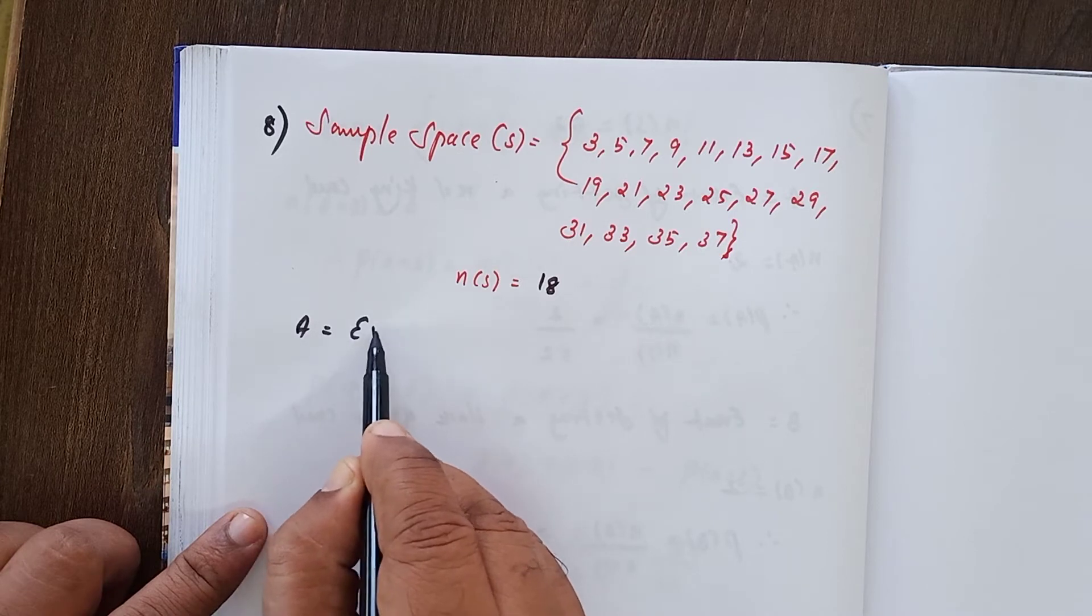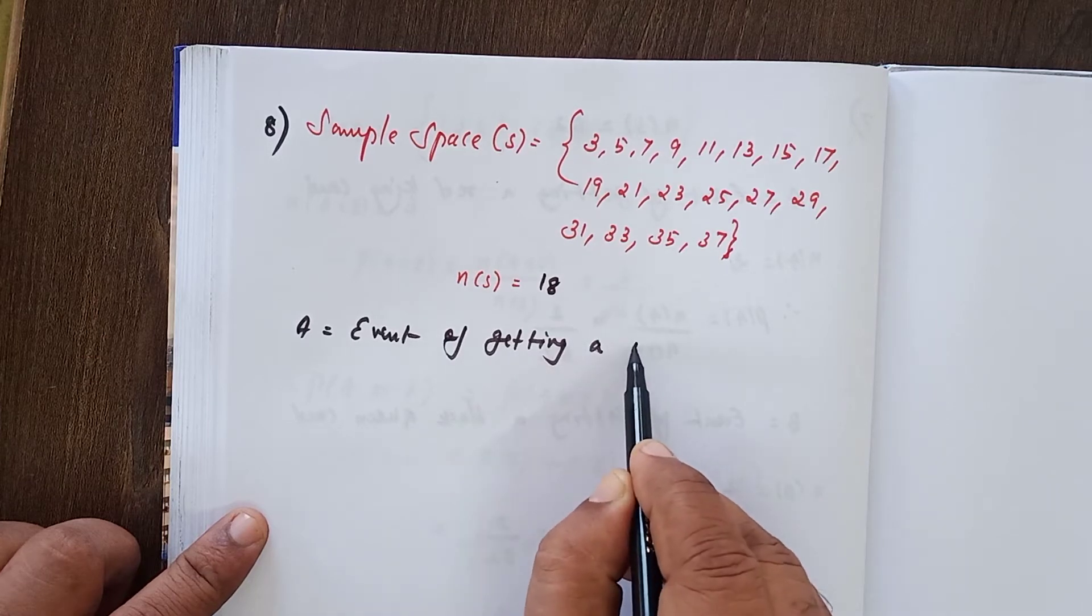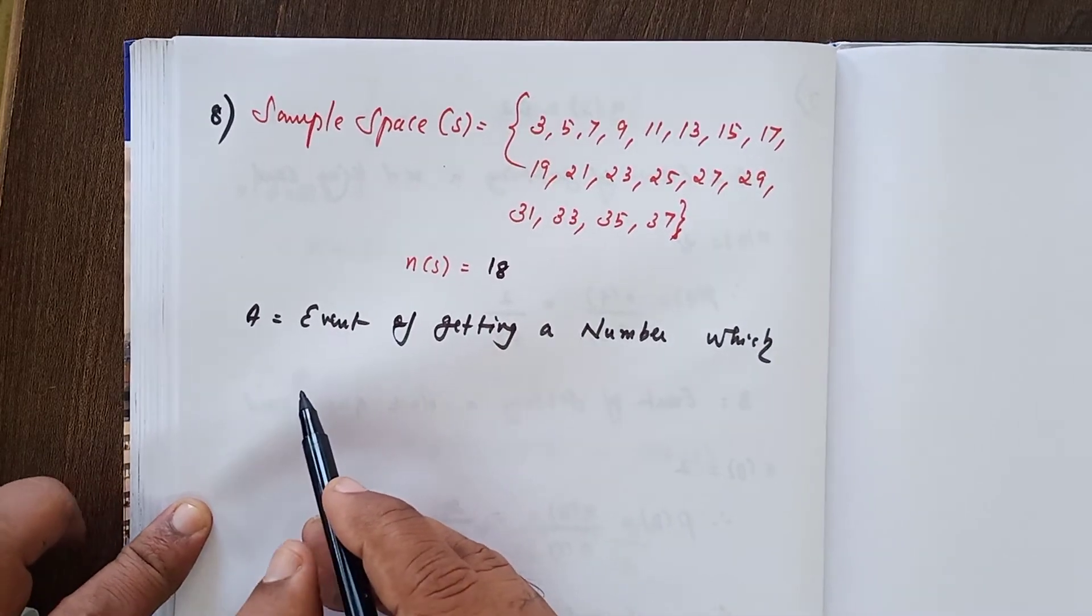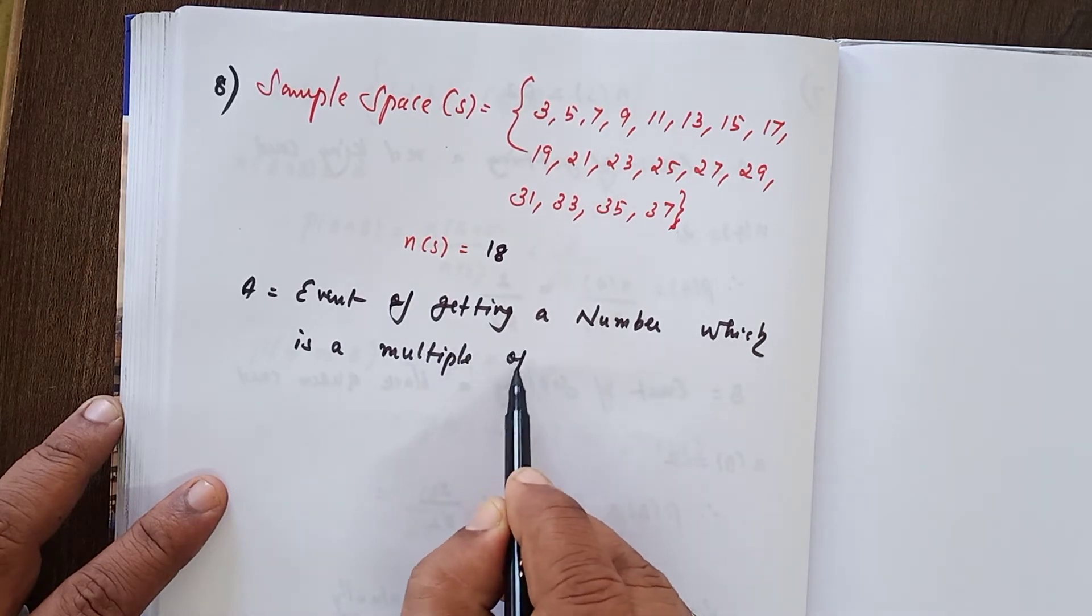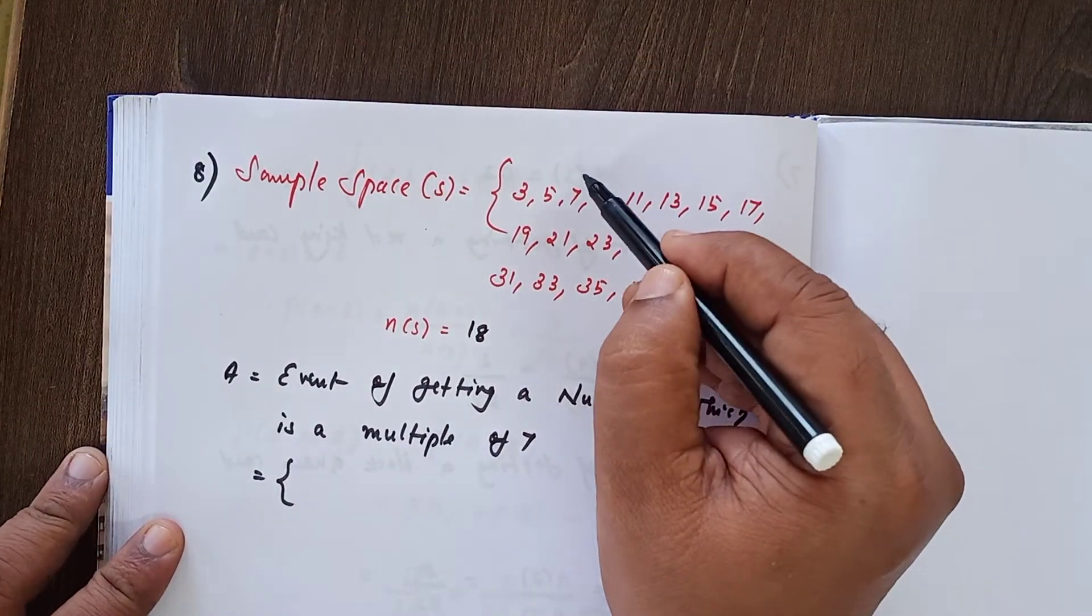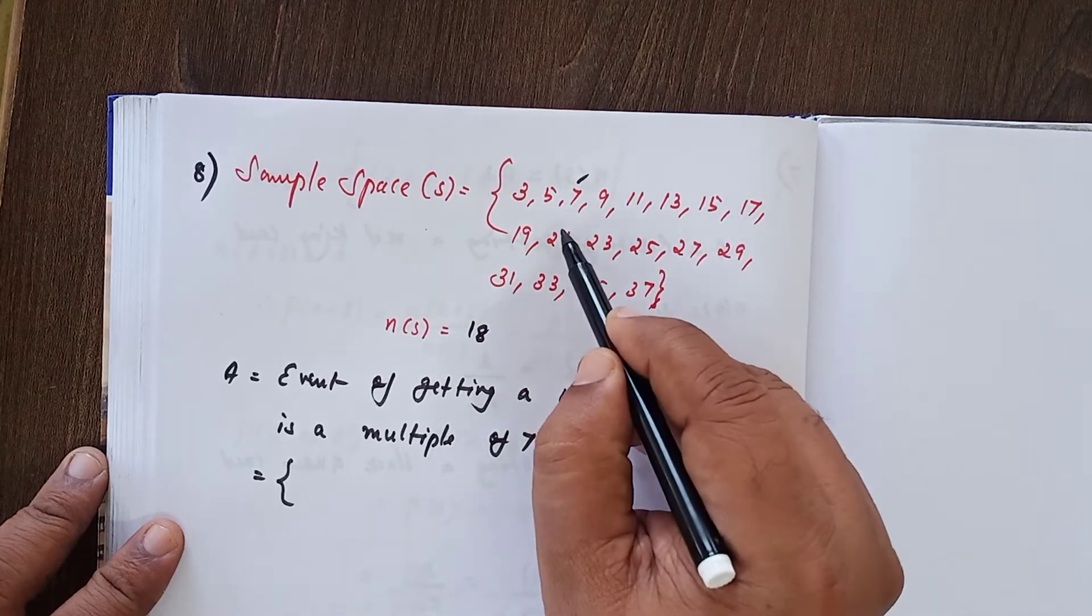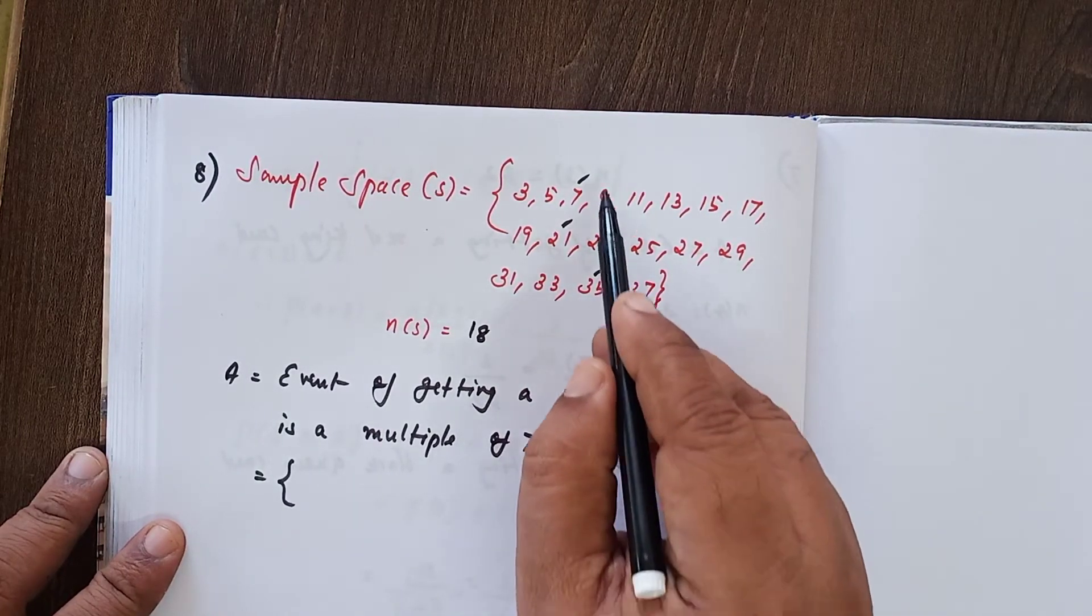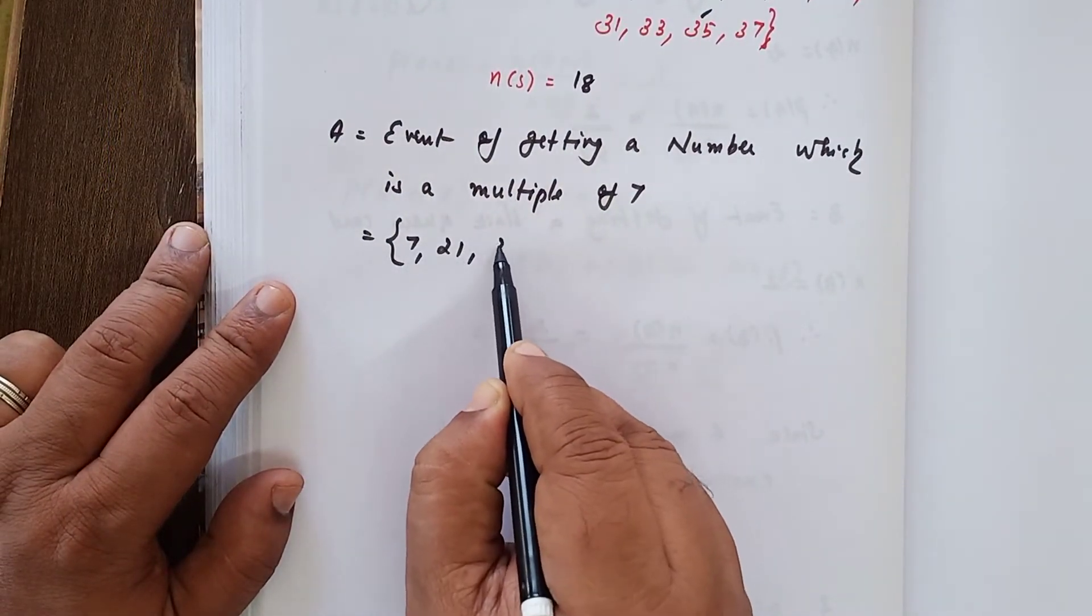Now A, that is equal to event of getting a number which is a multiple of 7. Multiple of 7 - what are all the numbers? Here we have 7, 7 plus 7 is 14, no 14 at all. 14 plus 7 is 21, 21 plus 7 is 28, no 28. 28 plus 7 is 35. Only 3 numbers we have: 7, 21, and 35.